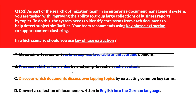Option C: discover which documents discuss overlapping topics by extracting common key terms. Key phrase extraction is used to highlight important terms in documents, which helps in thematic grouping and identifying related content across multiple files. We'll keep it. Option D: convert a collection of documents written in English into the German language — translation tasks are handled using machine translation tools, not key phrase extraction. Wrong answer.